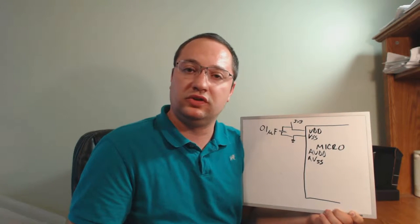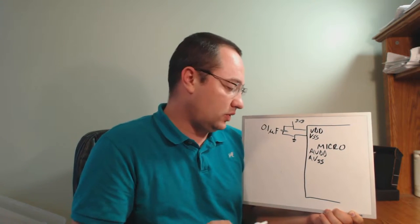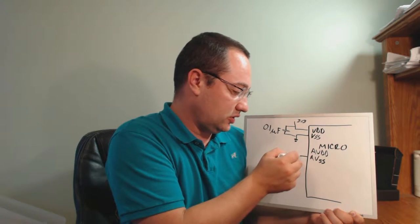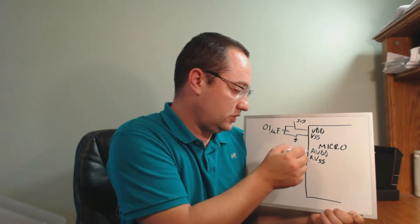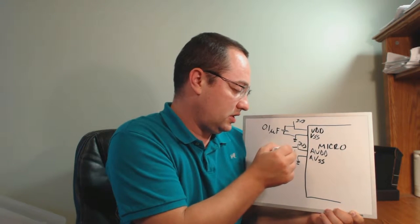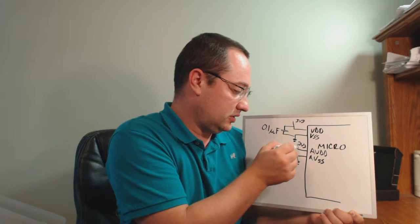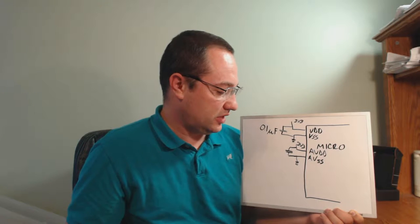If you're doing precision analog to digital converter work you would generally add a little more filtering to these, but that's outside the scope of what we're working on today. So these get hooked up exactly the same way: ground, 3V3, and a decoupling capacitor across them.